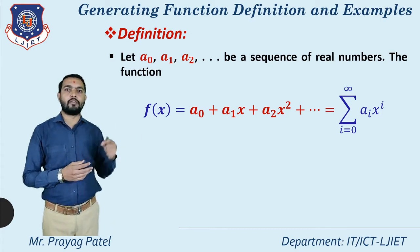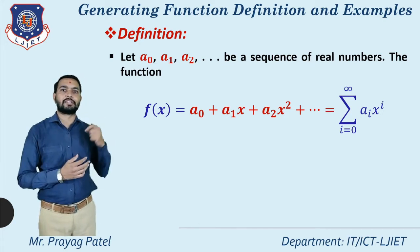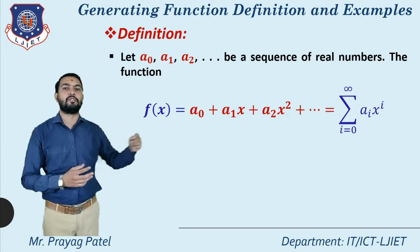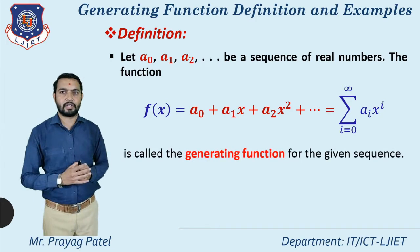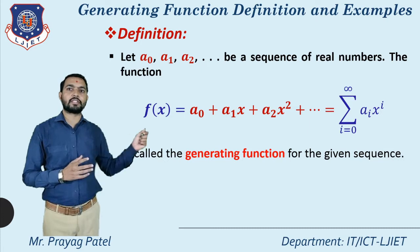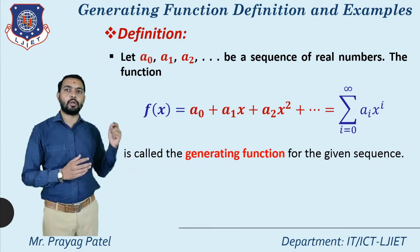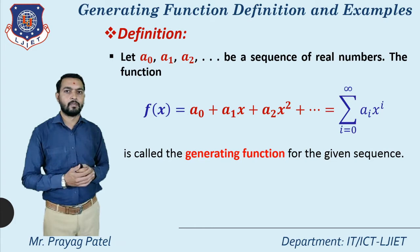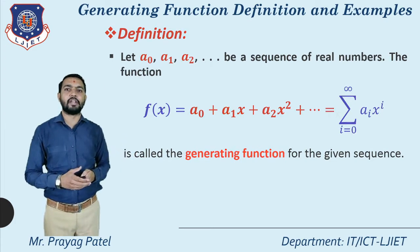Here aᵢ means a0, a1, a2, and xⁱ means x⁰, x¹, x² up to x^∞. This is called the generating function for the given sequence a0, a1, a2, and so on. This is the common definition of the generating function.